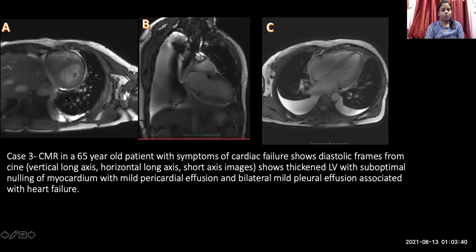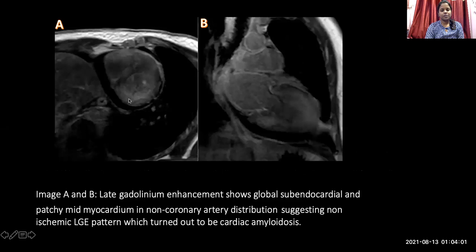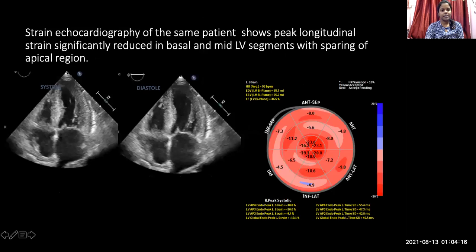The first case in the non-ischemic group is a 65-year-old male presenting with cardiac failure. Diastolic frames of cine images in the vertical long axis, horizontal long axis, and short axis show a thickened LV with sub-optimal filling of the myocardium, mild pericardial effusion, and bilateral pleural effusion. The late gadolinium enhancement images show global sub-endocardial patchy mid-myocardial enhancement in a non-coronary artery distribution, suggesting non-ischemic LGE. This was confirmed as cardiac amyloidosis on fat-pad biopsy. Strain echocardiography done after the MRI diagnosis showed sparing of the apex with involvement of the base, characteristic of amyloidosis.